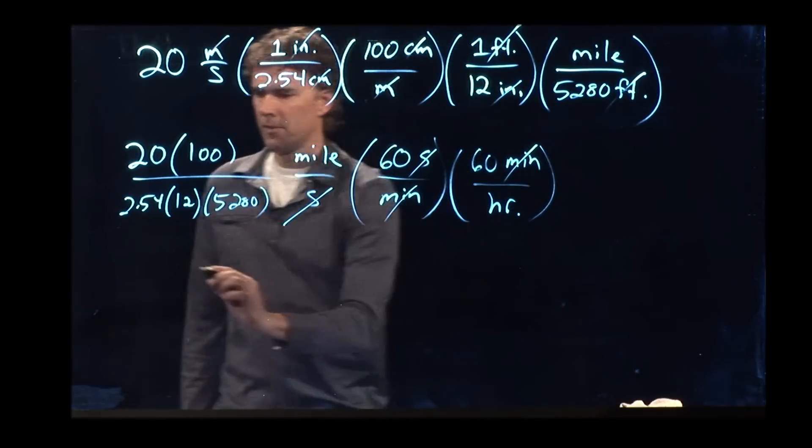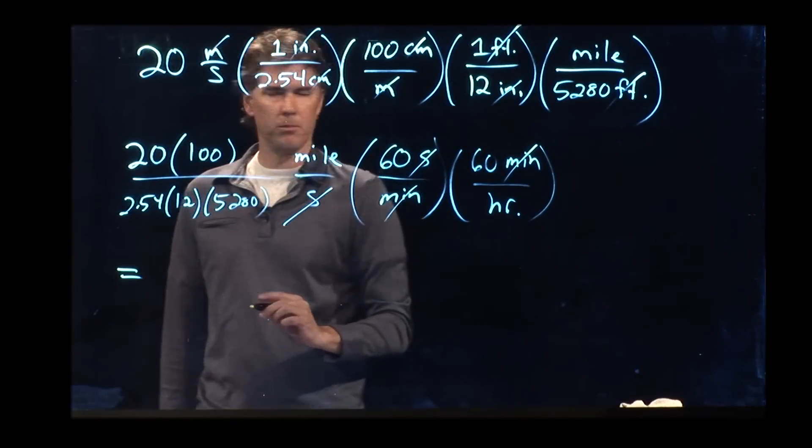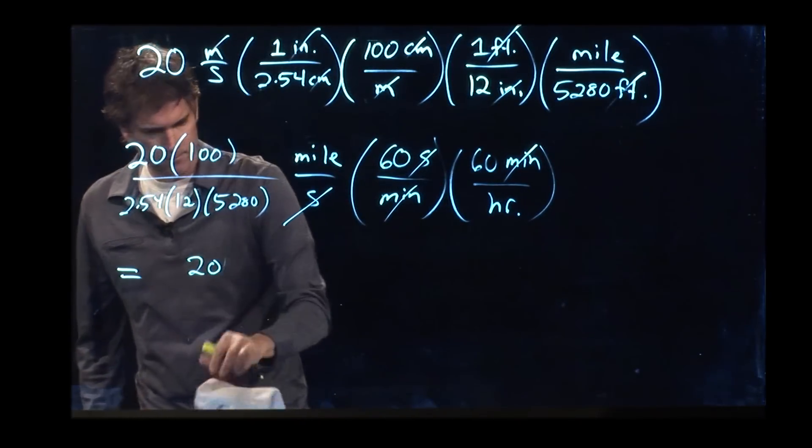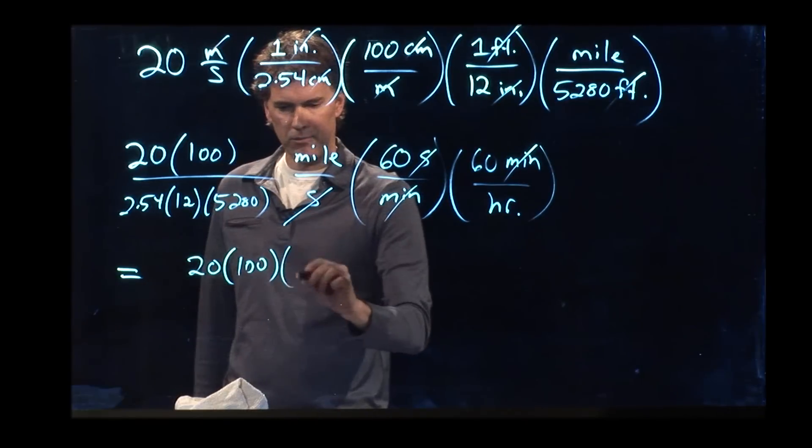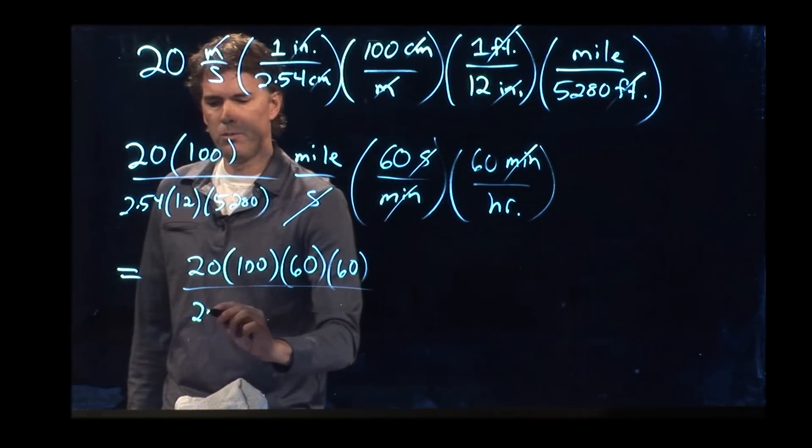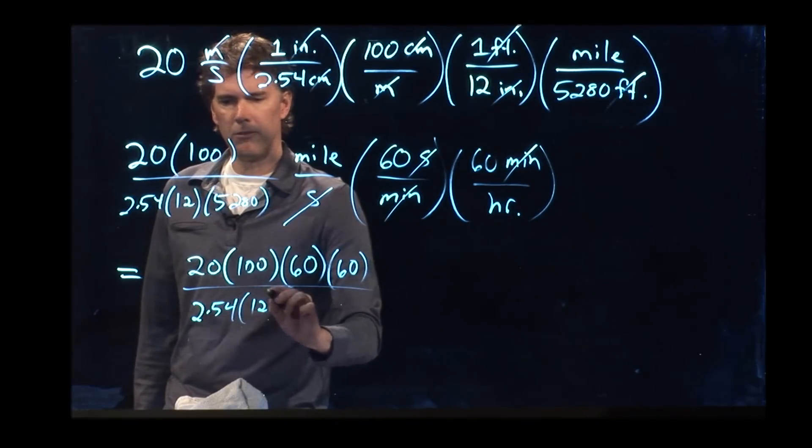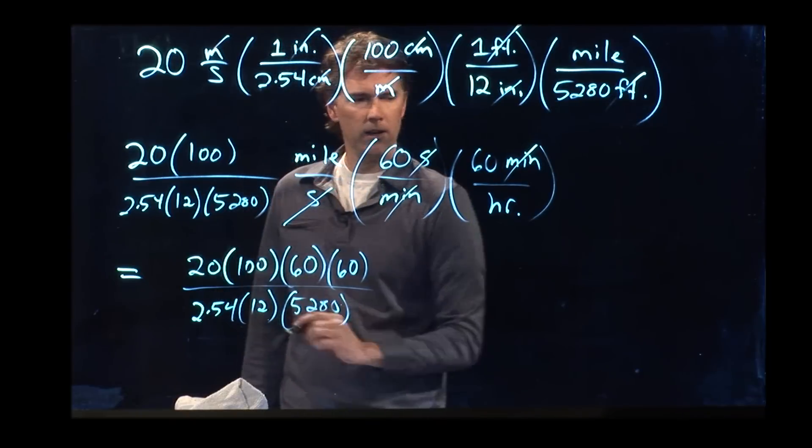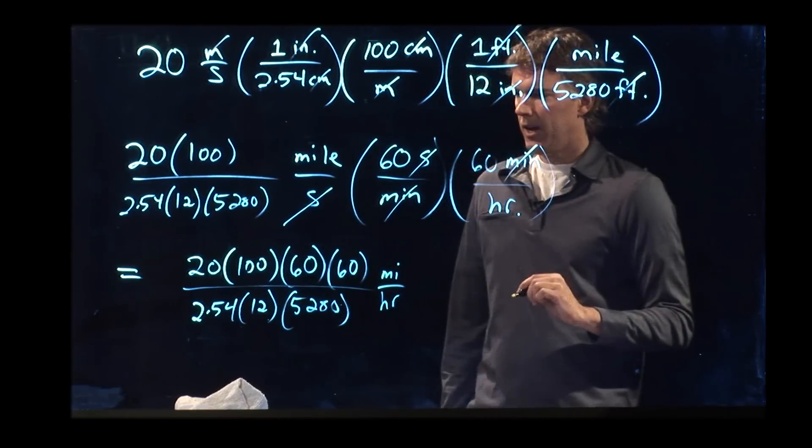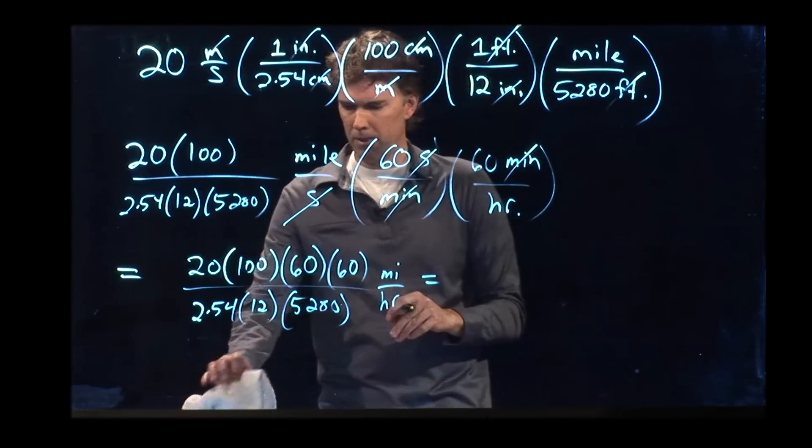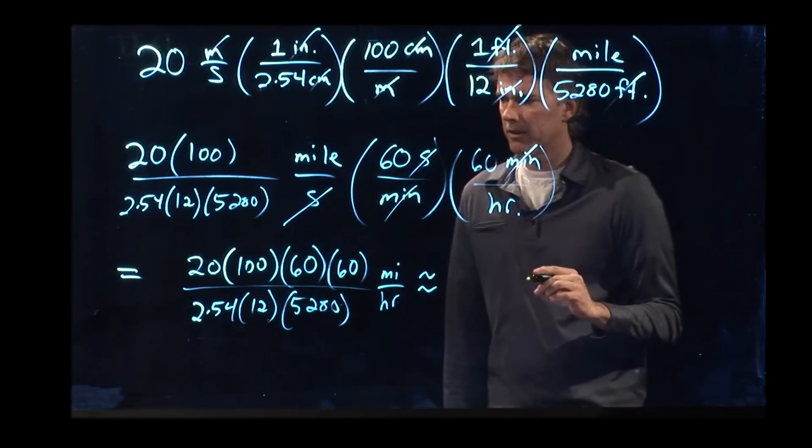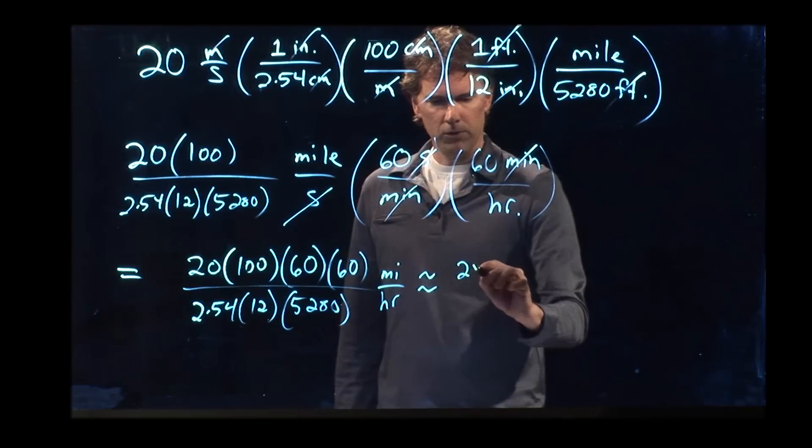And now we're left with hours, and we have some numbers to multiply here. We've got 20 times 100 times 60 times 60, and we're going to divide by 2.54 times 12 times 52.80, and we're going to end up with miles per hour. And now we can multiply this stuff out. So when you're multiplying out big numbers like this, you can always approximate it on paper, and I encourage you to do this because it's good practice.